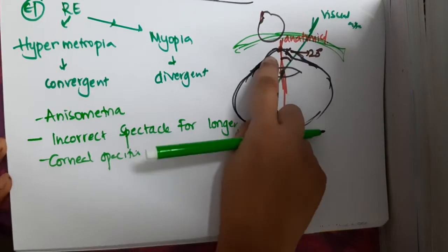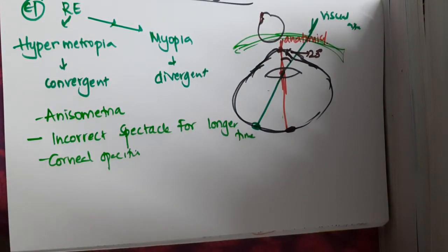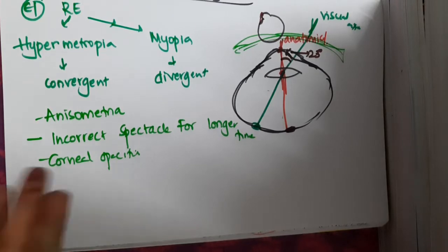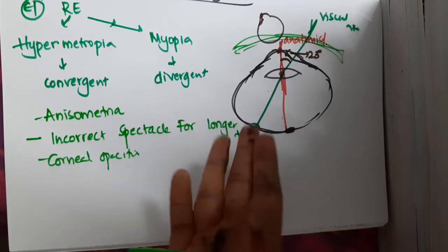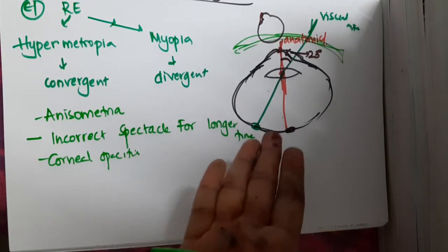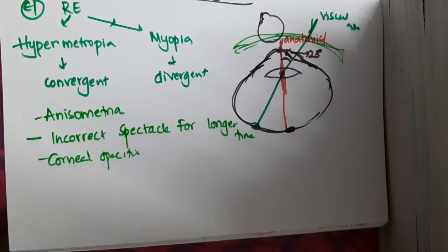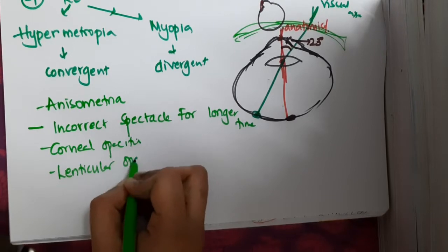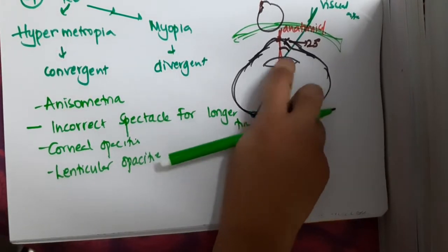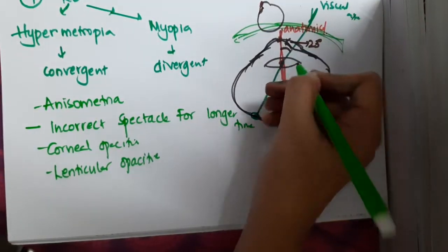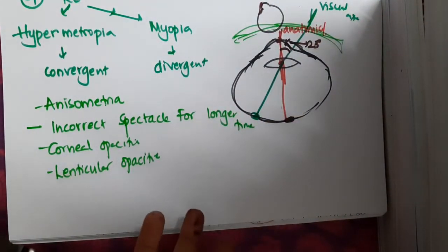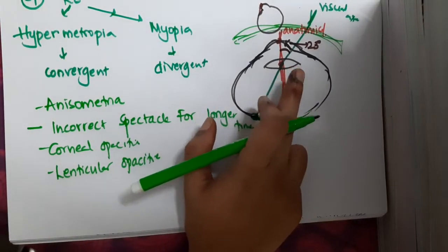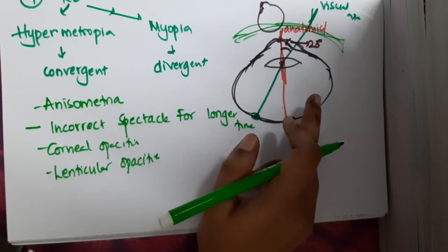Whenever there are corneal opacities, normally the cornea is transparent and light can easily pass through. But with corneal opacities, light cannot pass through properly, so focus on the fovea does not occur, binocular vision and fusion and stereopsis will not occur properly, causing concomitant squint. Similarly, lenticular opacities also deviate the visual axis, because the increased refractive index of the opacified lens causes light to bend more than normal.